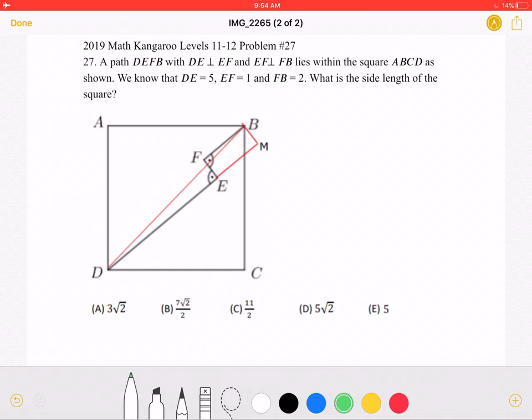To start, the problem states that DE is perpendicular to EF and EF is perpendicular to FB. Because DE and FB are perpendicular to the same line, EF, DE and FB must be parallel.